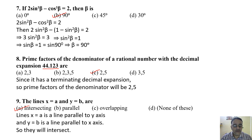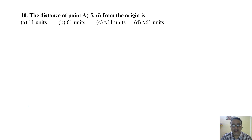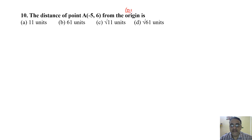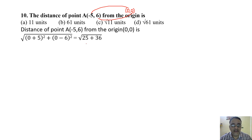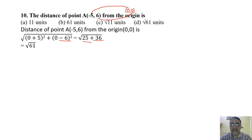Question 10: The distance of point A(−5, 6) from the origin (0, 0). Using the distance formula: √((0−(−5))² + (0−6)²) = √(25 + 36) = √61. The correct answer is option D.